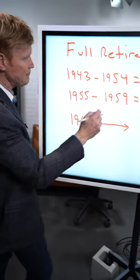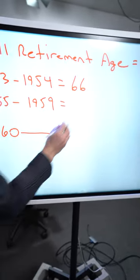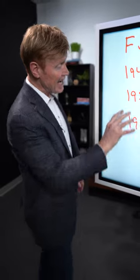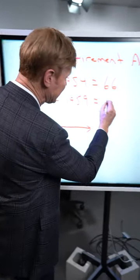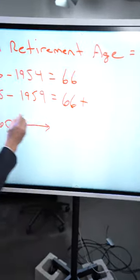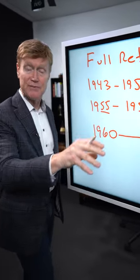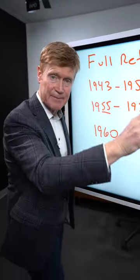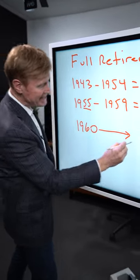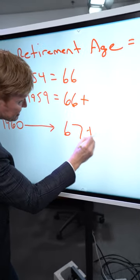So here's the way we do it. Anyone born between 1943 and 1954 has a full retirement age of 66. Anyone born between 1955 and 1959, it's 66 plus. So if I'm born in 1955 you add two months, 1956 add four months, 1957 add six months, 1958 add eight months, 1959 add ten months to your full retirement age. And then in 1960 and onward, full retirement age is 67.